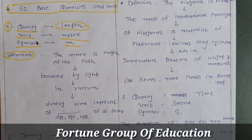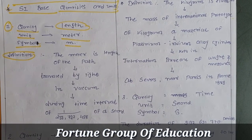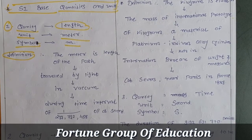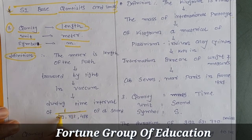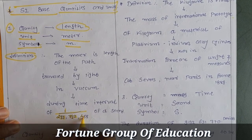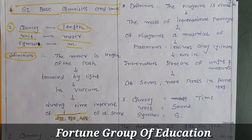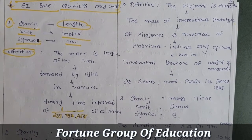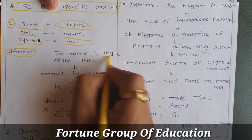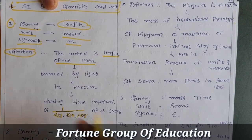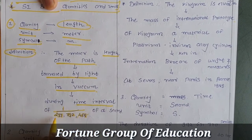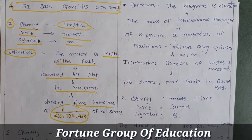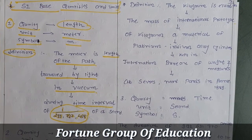The meter is the length of a path traveled by light in vacuum during a time interval of 1/299,792,458 of a second. Three key points: first, length of the path; second, traveled by light in vacuum; third, during the time interval of 1/299,792,458 of a second.